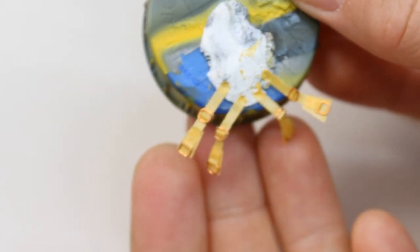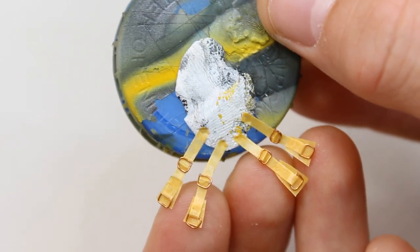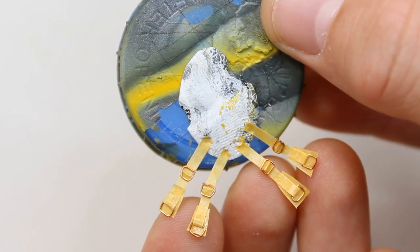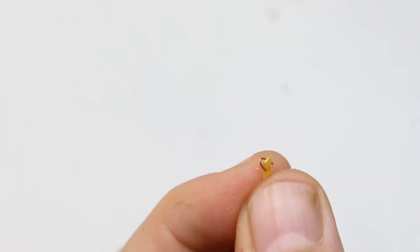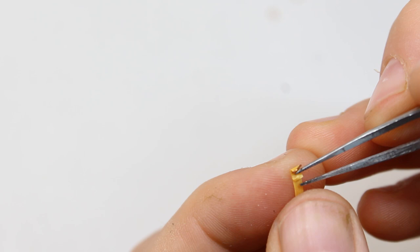There we are with the finished shape. I've added all them to the trusty bottle lid ready for painting. Now it's time to tackle the shoulder harnesses.